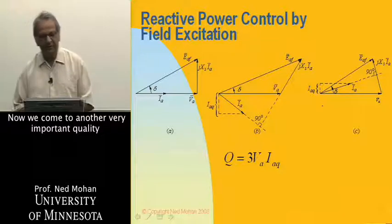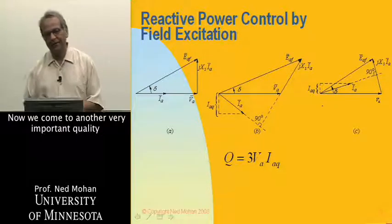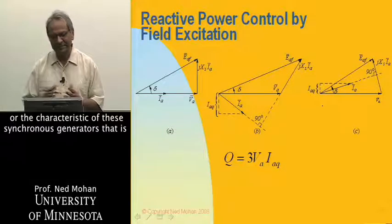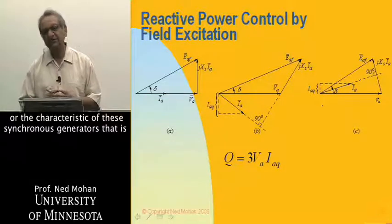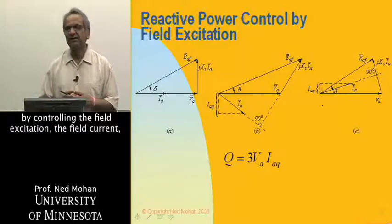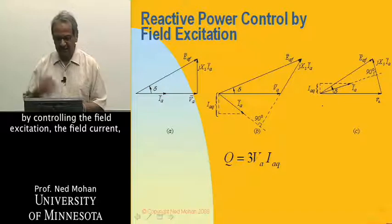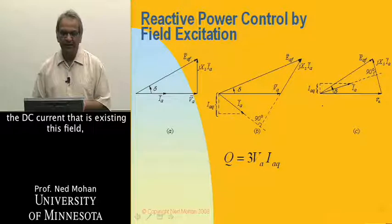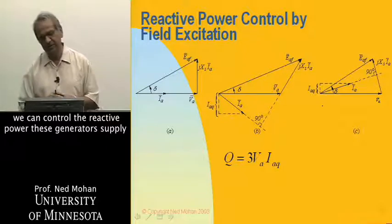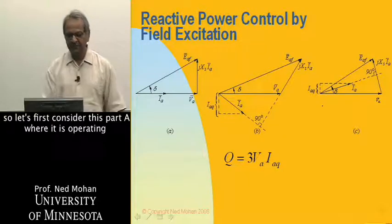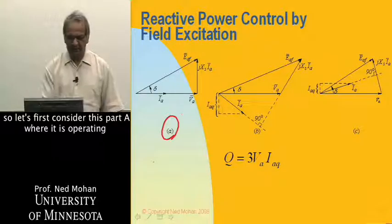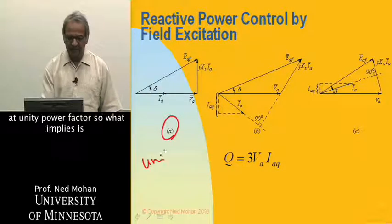Now we come to another very important quality or characteristic of synchronous generators. By controlling the field excitation — the field current, the DC current exciting this field — we can control the reactive power these generators supply. Let's first consider part A, where the generator is operating at unity power factor.